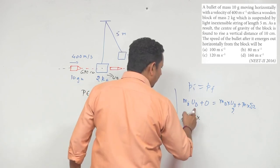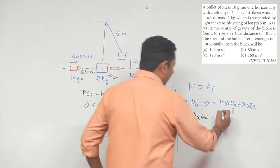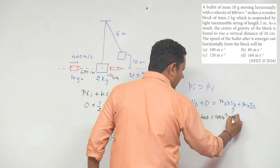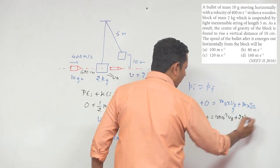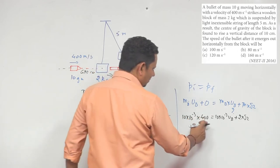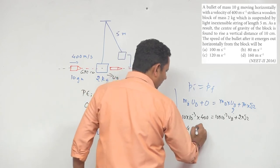root 2. If we calculate the left-hand side, this becomes 4. So we have 4 equals 10 times 10 to the power minus 3 times velocity of bullet plus 2 root 2.